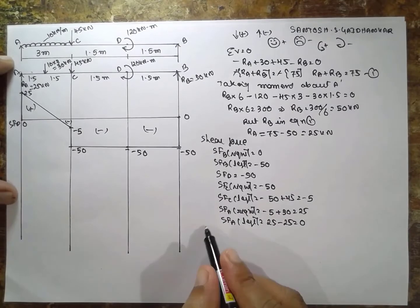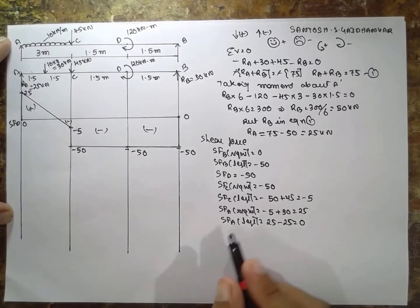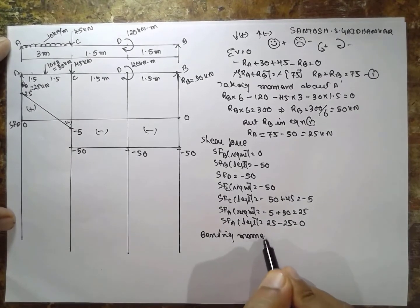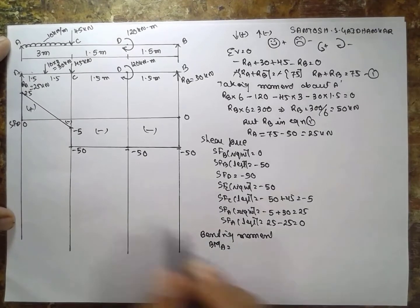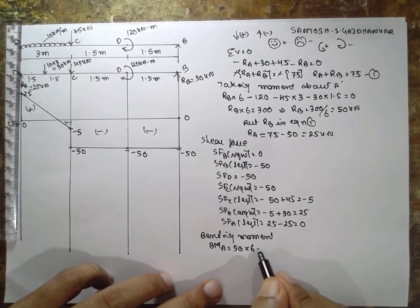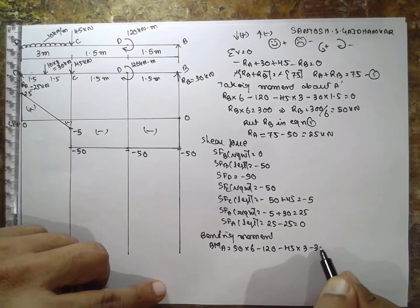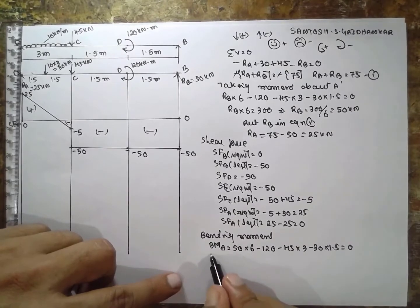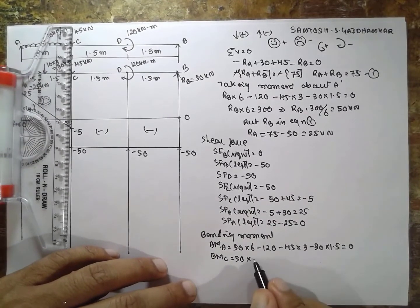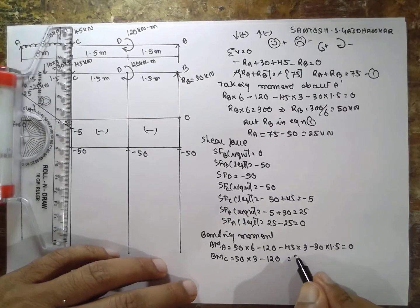Now for the bending moment diagram: BM at A — considering from the right: 50 into 6 minus 120 minus 45 into 3 minus 30 into 1.5 = 0. BM at C: 50 into 3 minus 120 = 30 kN·m. The couple acts at D, so we must consider left and right values separately.